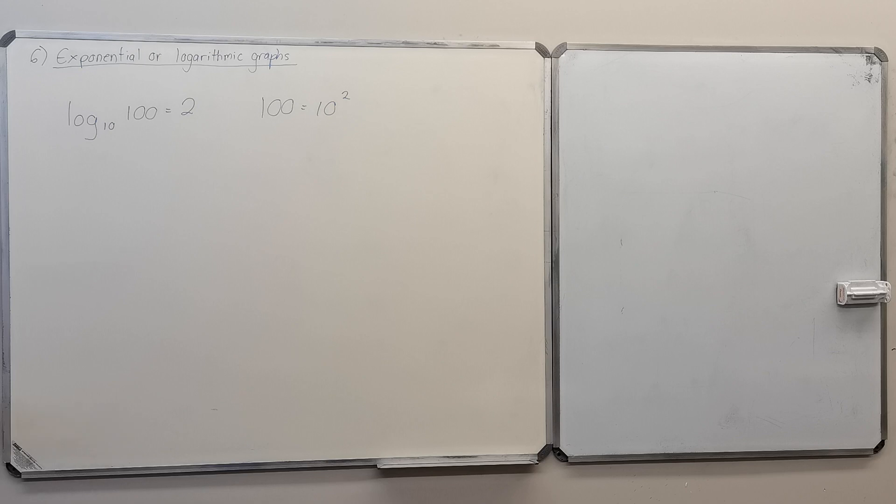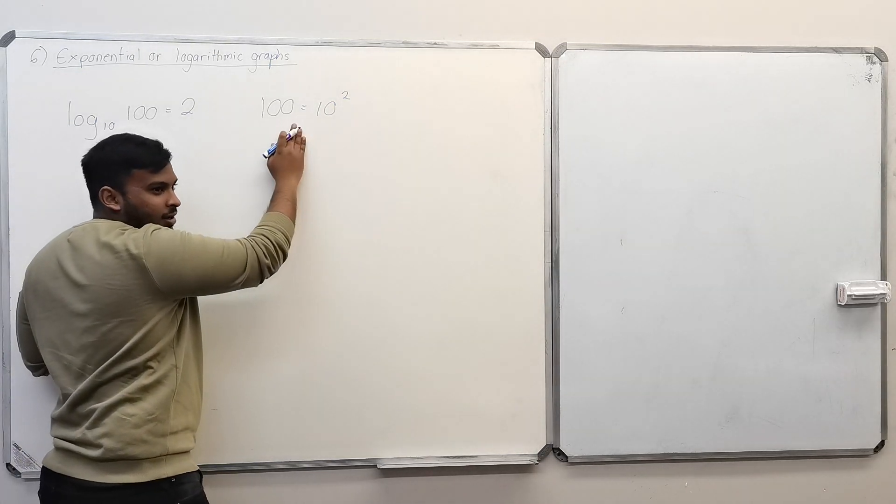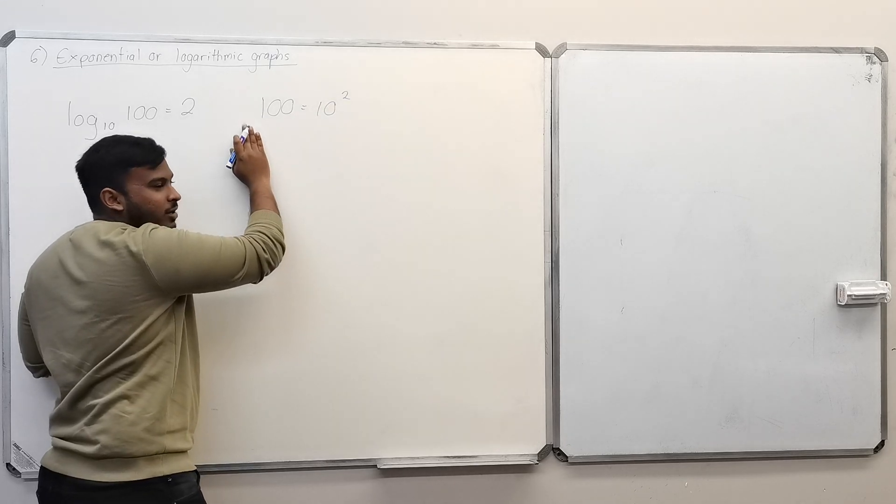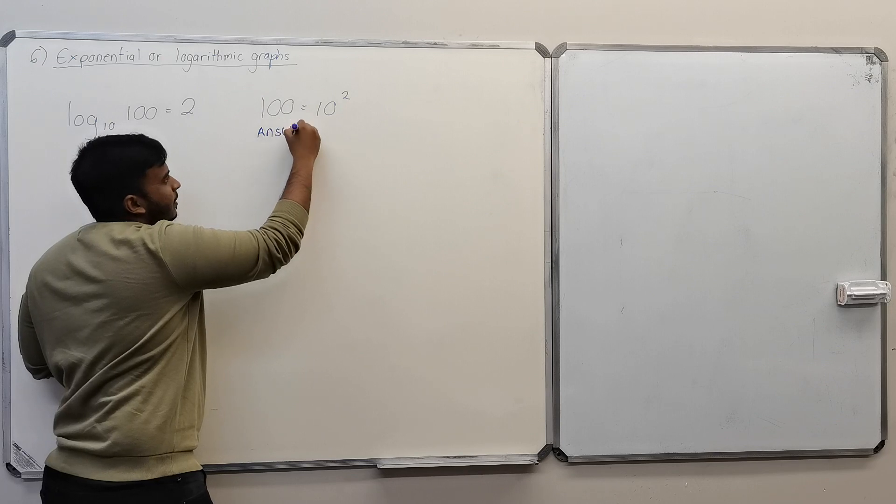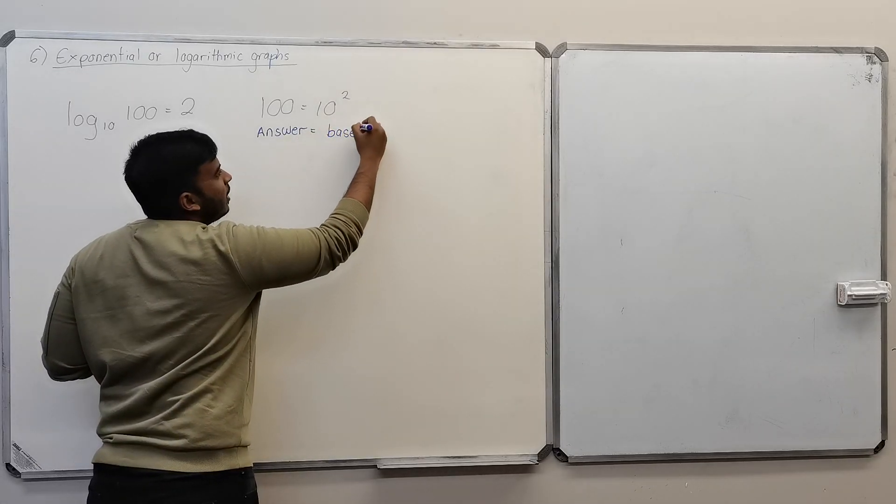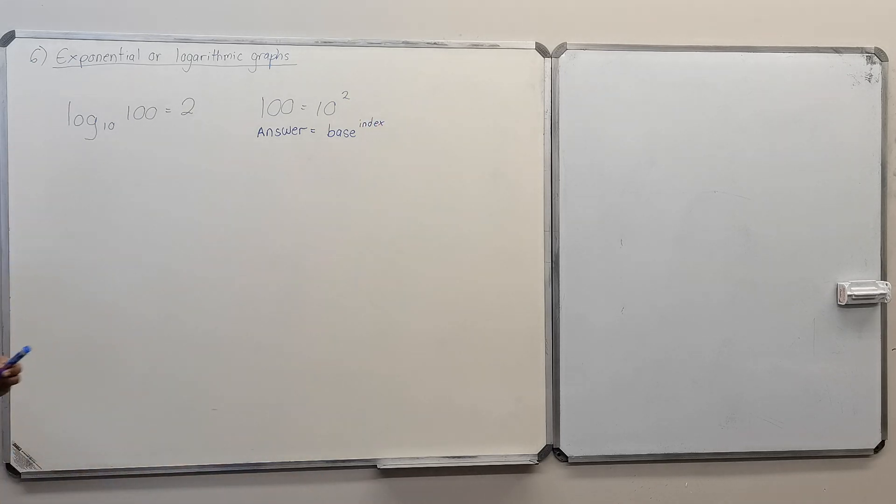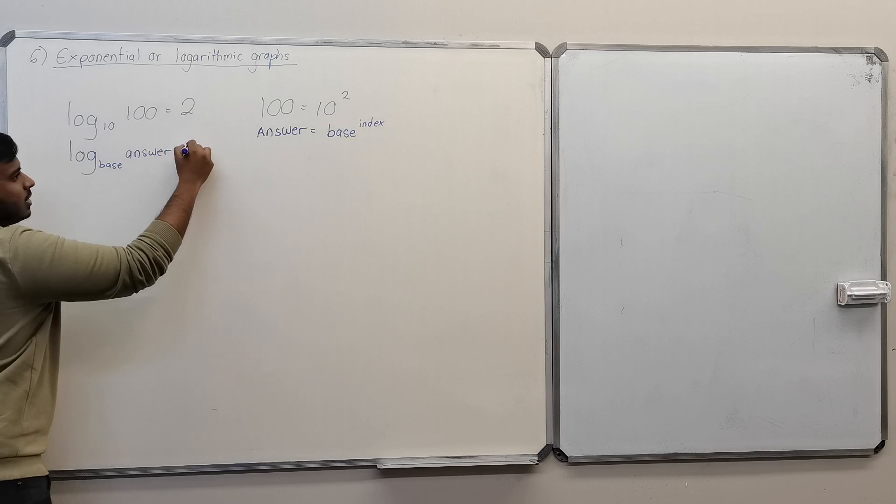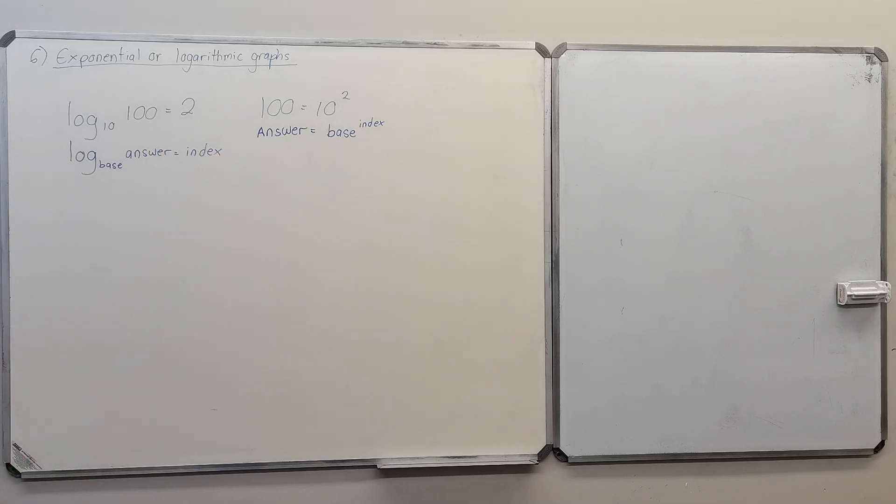In terms of naming what each thing is here, this here is your answer. 10 squared equals the answer. The answer is 100. Your 10 is your base, and it's to the power of whatever, the index. When you're converting it to log forms, you would say log base answer equals index.